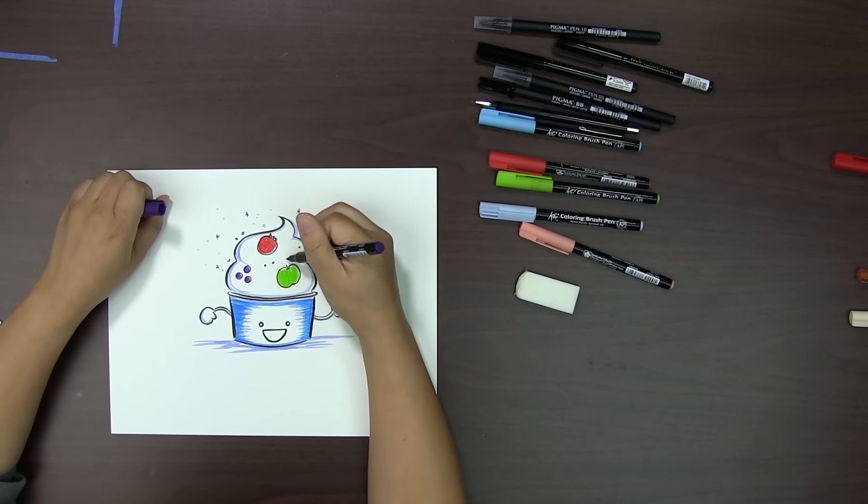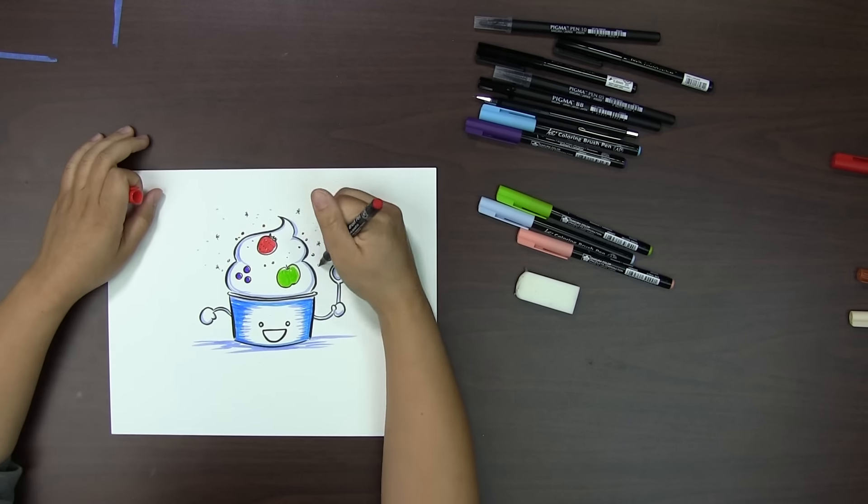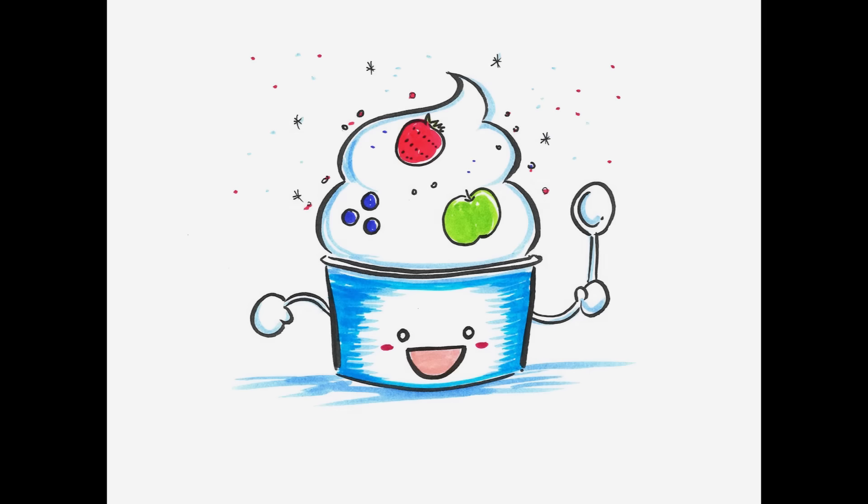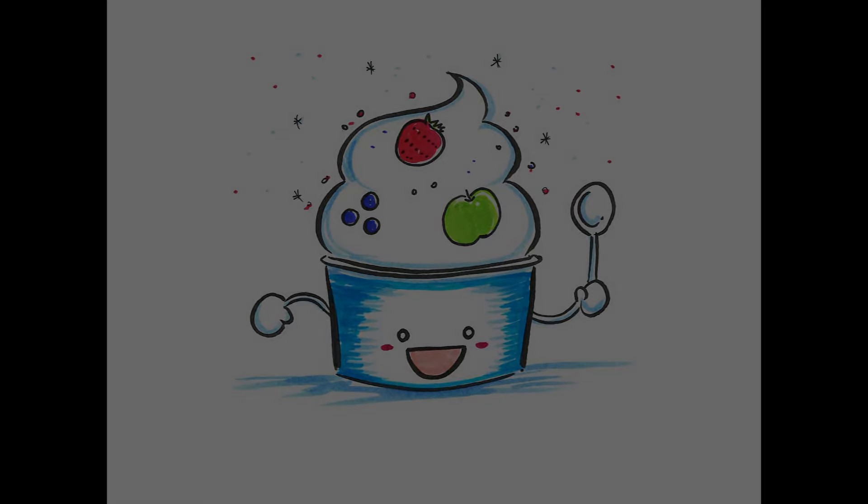Next is some purple for the blueberries, and the last details of the face with coral red and vermilion. And there you have it, the Chibi Frozen Yogurt. It's definitely a dilemma of looking both cute and delicious at the same time. Until next time, I hope you keep creating and stay pandarific. Bye!